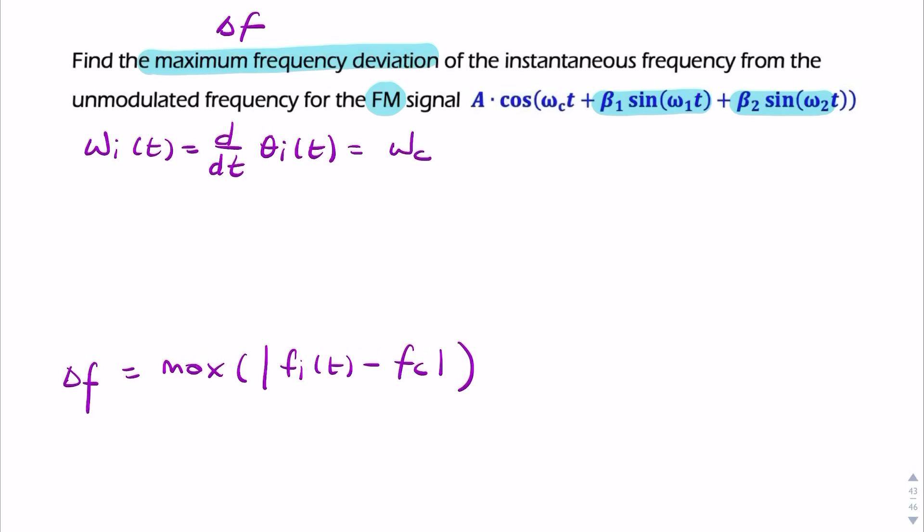So, if you take the derivative of that, you simply get omega c plus beta 1 omega 1 cosine omega 1t plus beta 2 omega 2 cosine omega 2t. And therefore, I could say the instantaneous frequency.